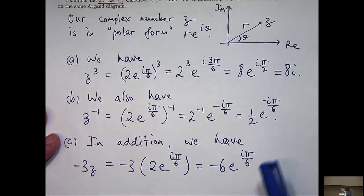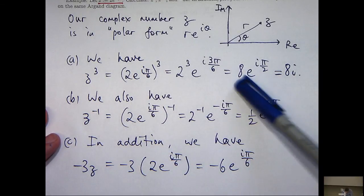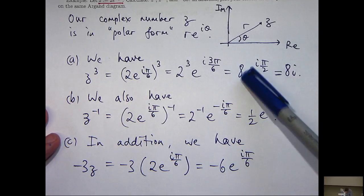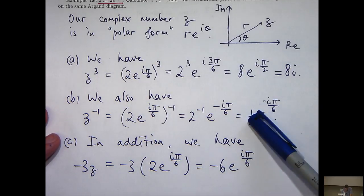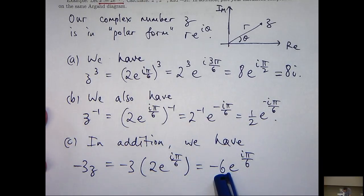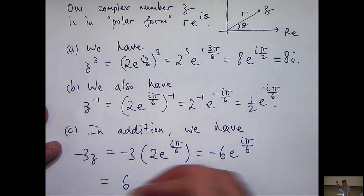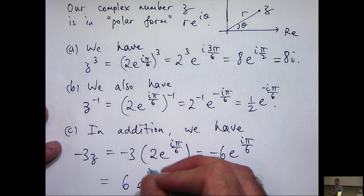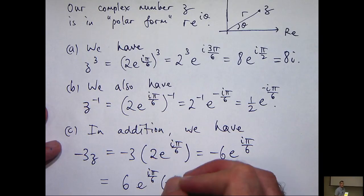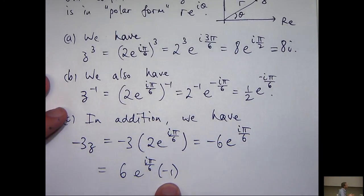But there's a slight difference between this, this, and this. Okay, well, I guess here. These have positive coefficients and this has a negative coefficient. Now, I'm going to turn this into a positive coefficient by taking out the factor of -1, and then writing -1 in the polar form.